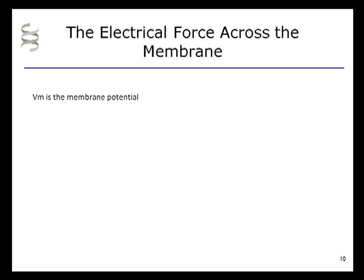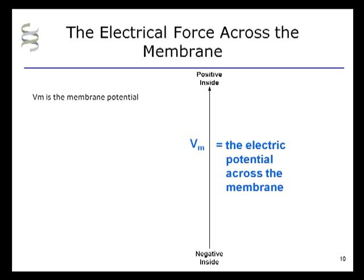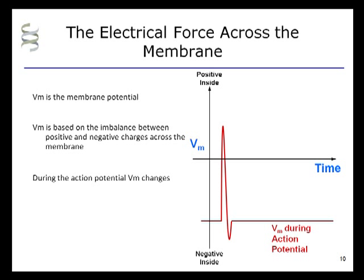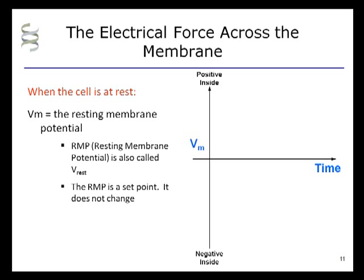During the action potential, VM changes. The resting membrane potential is the set point voltage the membrane will tend toward when at rest. It is abbreviated RMP, or V-rest. When the cell is at rest, VM — the membrane potential — equals the resting membrane potential. Compared to VM, the resting membrane potential is a set point that does not change.